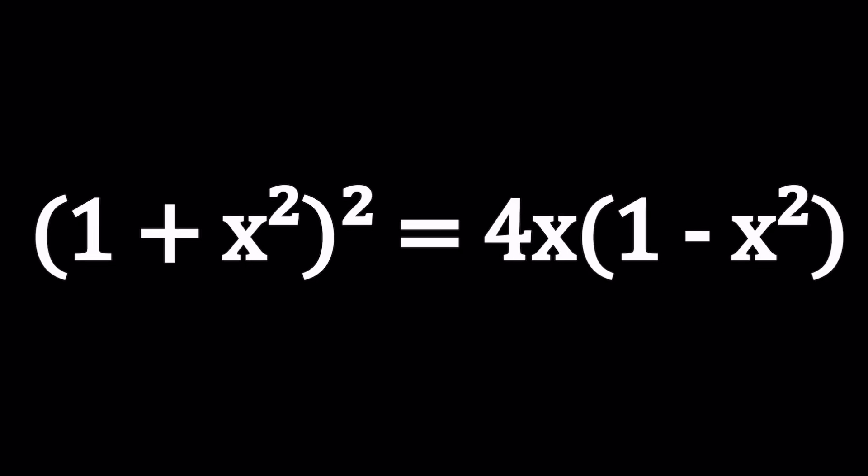Hello everyone. In this video, we're going to be solving a nice polynomial equation. We have (1 + x²)² equals 4x multiplied by (1 - x²). And we're going to be solving for x values. And guess what? I'll be presenting four methods. Yes, you heard me right. So stick around and let's get this done.